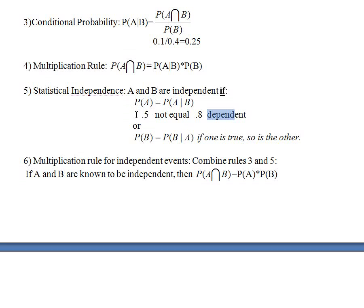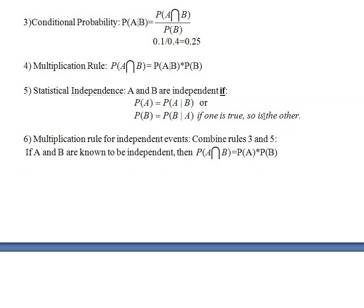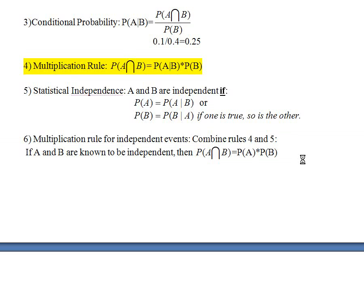Statistical independence makes life easy sometimes. Rule 6 is a special version of the multiplication rule — it simplifies life if you know that the things you're dealing with are independent. The multiplication rule for independent events combines rules 4 and 5. Normally, to find an intersection, we'd need to know the probability of A given B, multiplied by the probability of B.